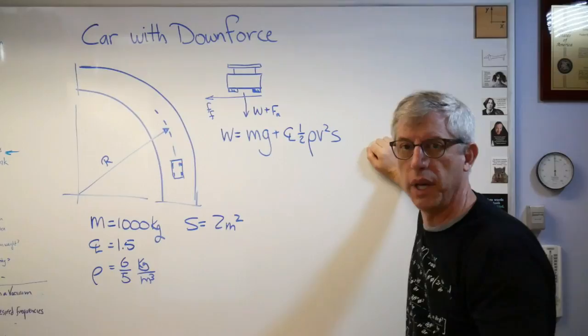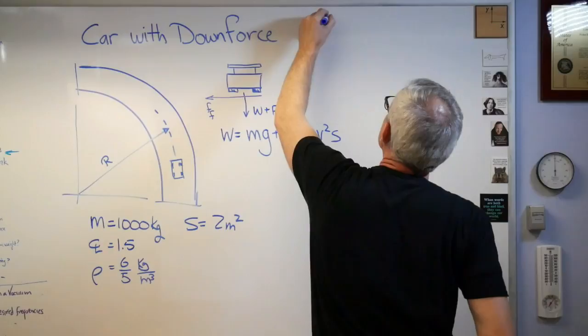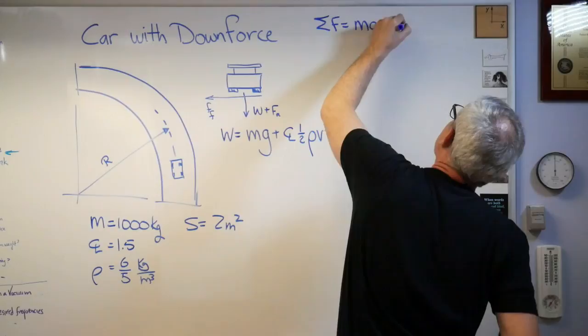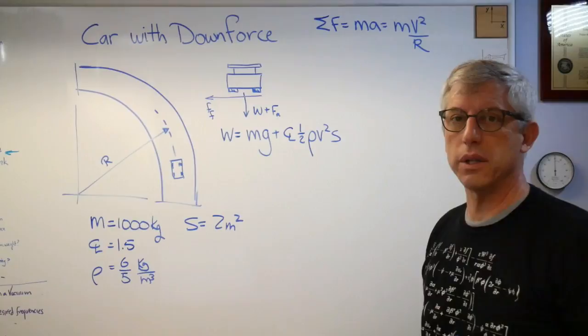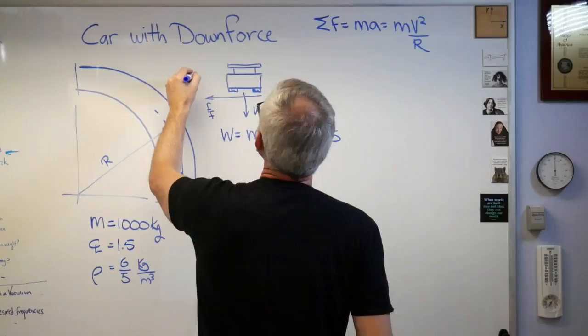I'm going to start with Newton's law and say the sum of the forces equals MA. Well, since this is a circle, that's MV squared over R. Now we're going to need a coordinate system. We know we're turning left, we know we're trying to go that way, so let's make positive X that direction.